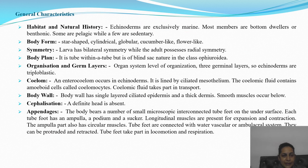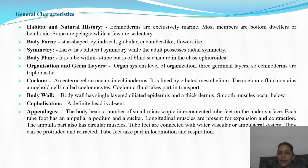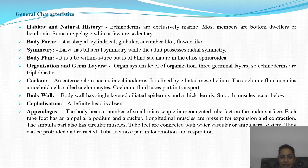General characteristics of Echinodermata — habitat and natural history: they are exclusively marine. Exclusively marine means all species are found only in marine environments. Most members are bottom dwellers or benthic — like starfish, which are flat and found at the bottom. Some are pelagic while a few are sedentary, meaning fixed.